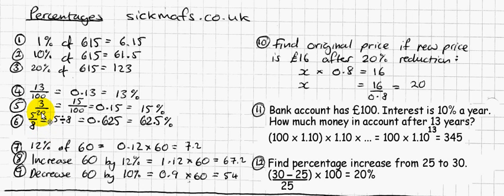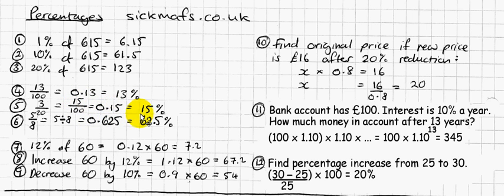If you have a fraction that's not out of 100, for example 3 out of 20, that's the same as 15 out of 100 — just multiply top and bottom by 5. So 15 out of 100: 15 divided by 100 is 0.15, or 15 out of 100 is 15%.